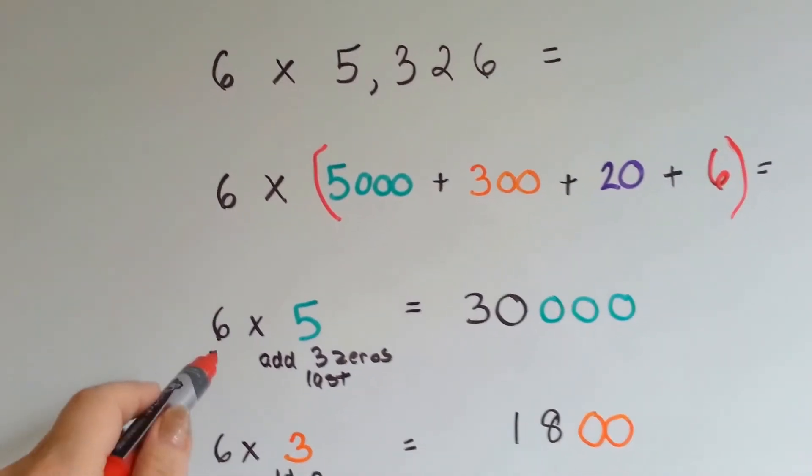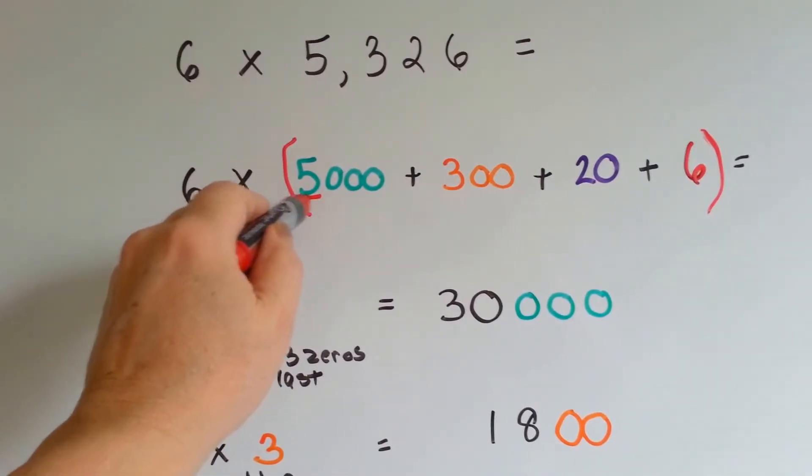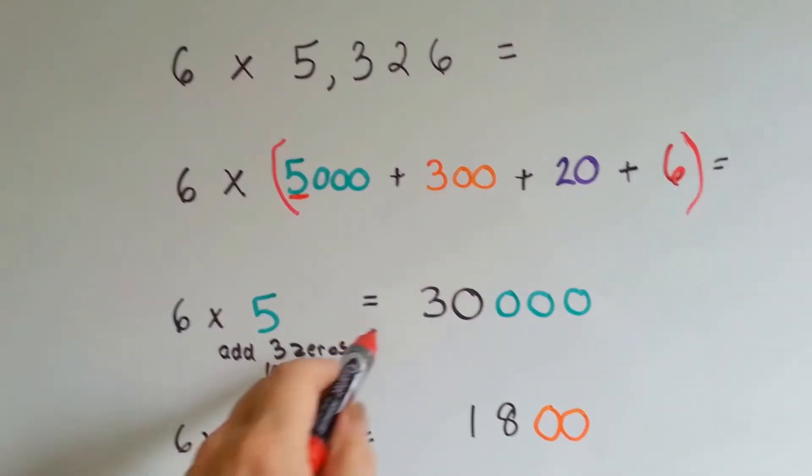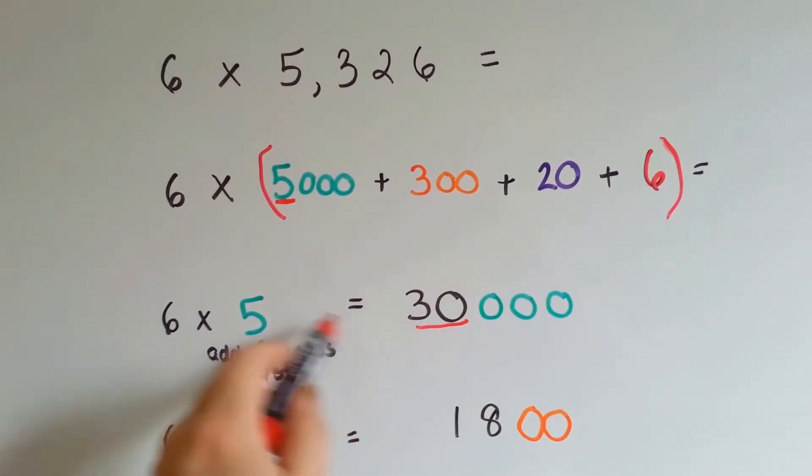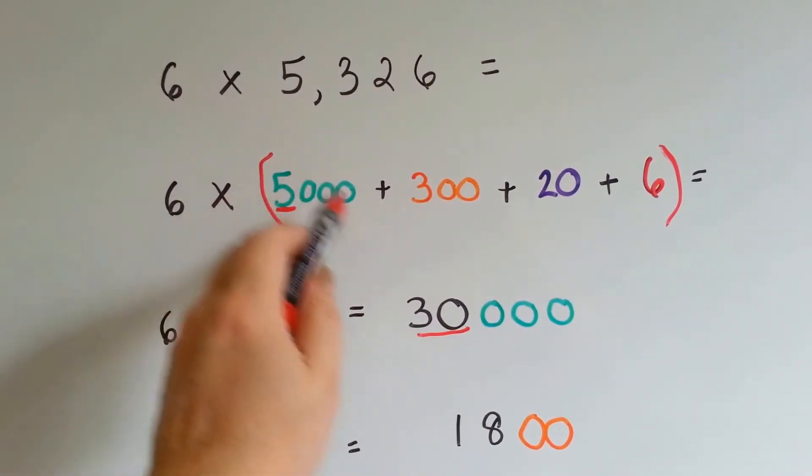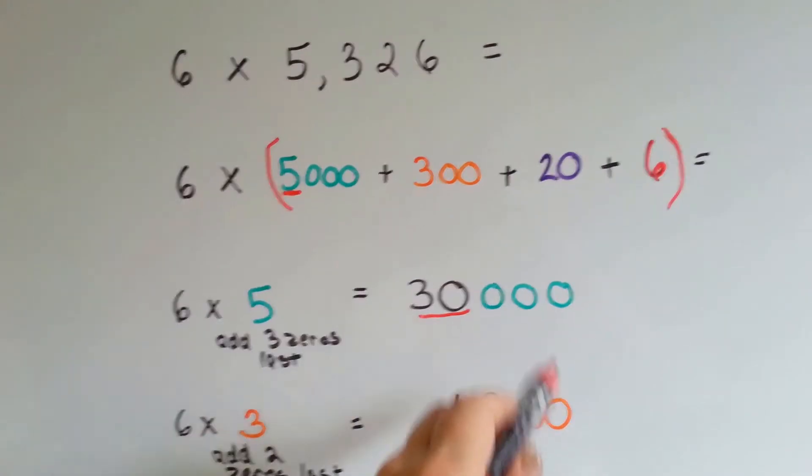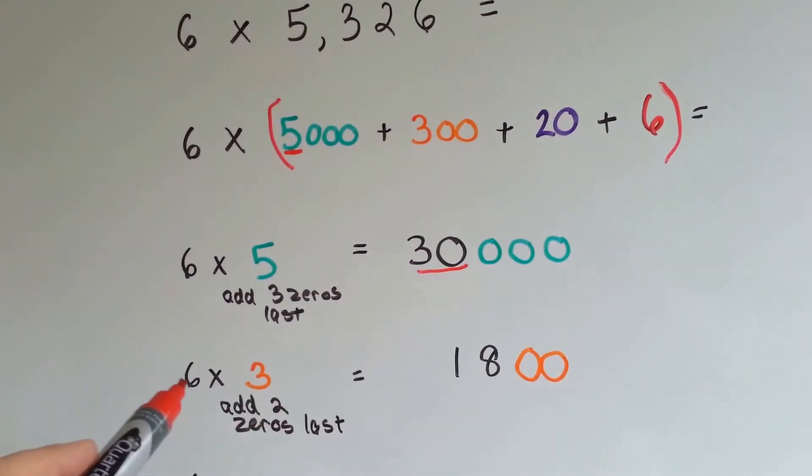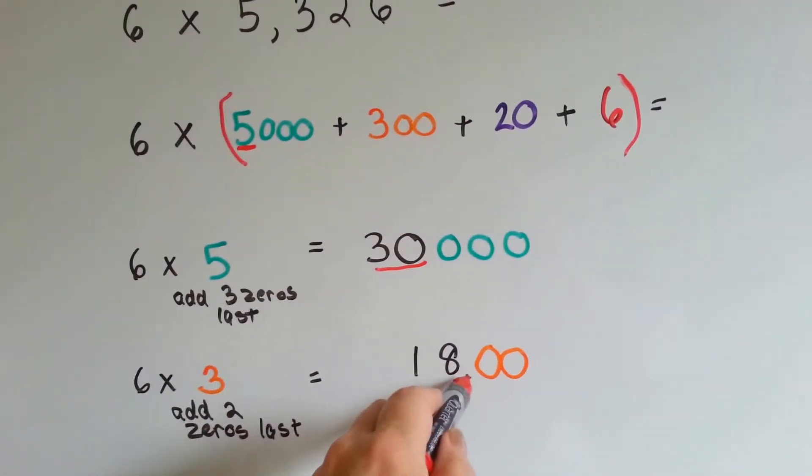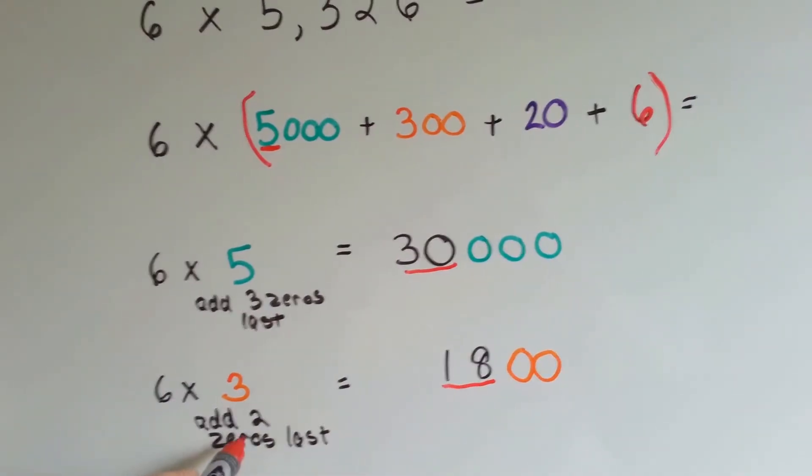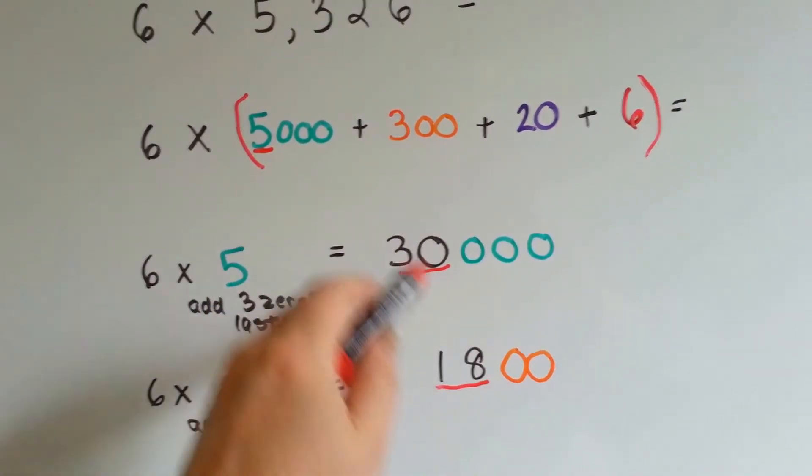So the first thing we're going to do is the 6 times 5, which is right here, and that's 30, and then we're going to add the three zeros. Then we're going to do 6 times 3, which is 18, and add the two zeros from it.